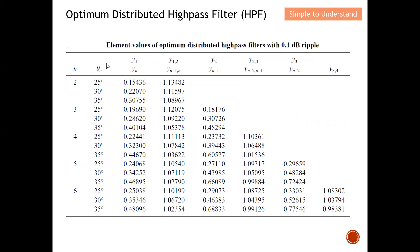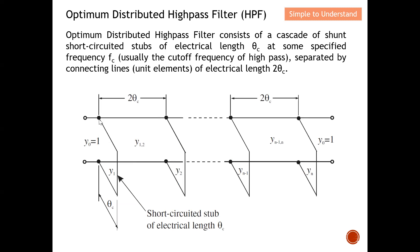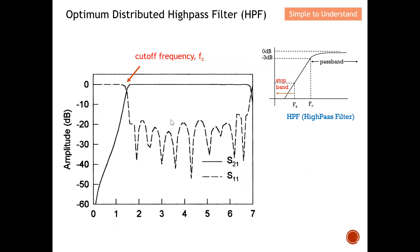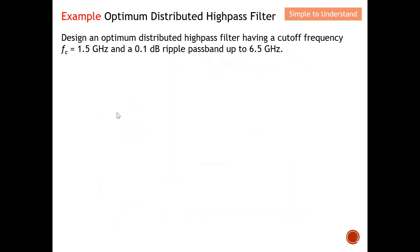This table shows the element values of the optimum distributed high pass filter with a 0.1 dB ripple. Later I'm going to show you step by step how to use this table to calculate the impedance of all elements. For example, how to calculate Y_not, Y1, Y12, and so on. I will walk through using the table to derive all impedance values for the optimum distributed high pass filter.